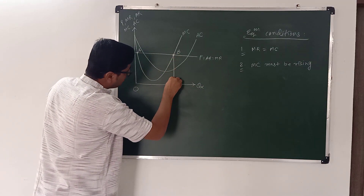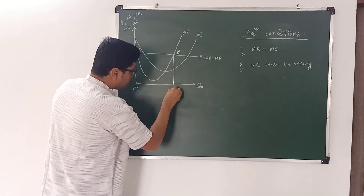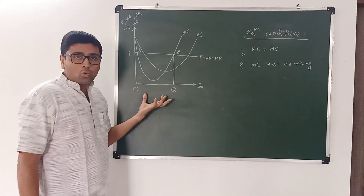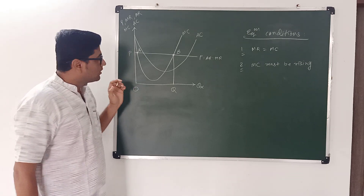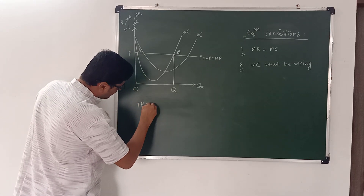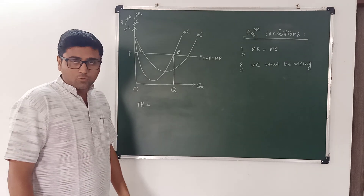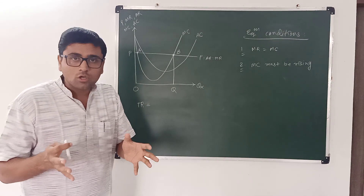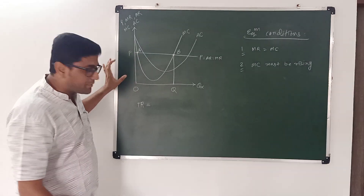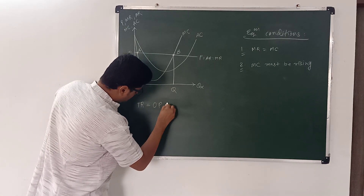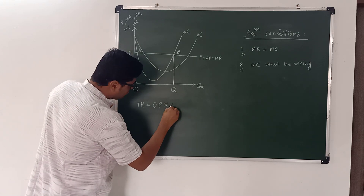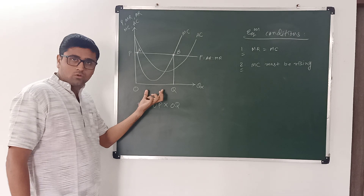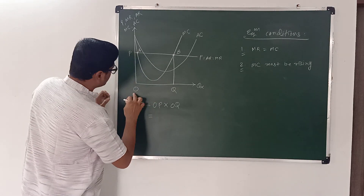Therefore, B is the equilibrium point at which both conditions are satisfied: marginal revenue equals marginal cost and marginal cost is rising. The firm will be in equilibrium at point B and suppose the output of this commodity is OQ. Total revenue is price into quantity, that is OP into OQ, which equals OPBQ.